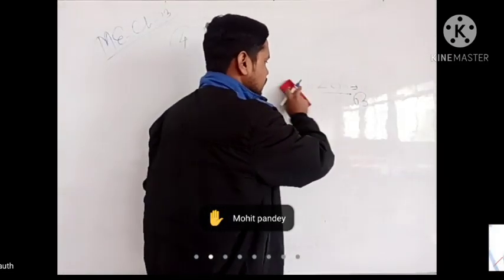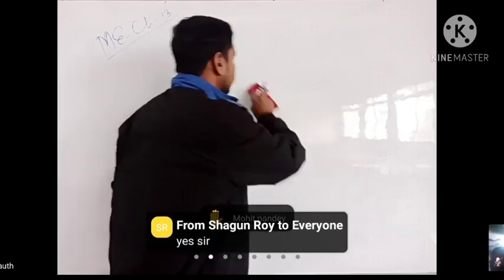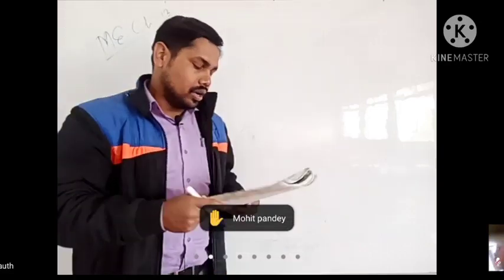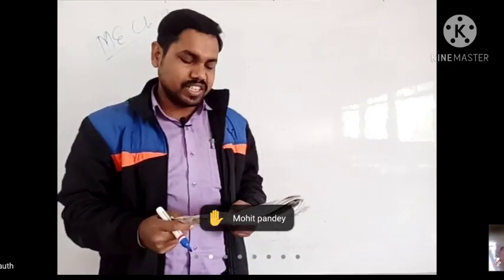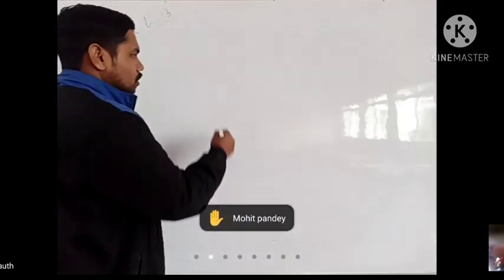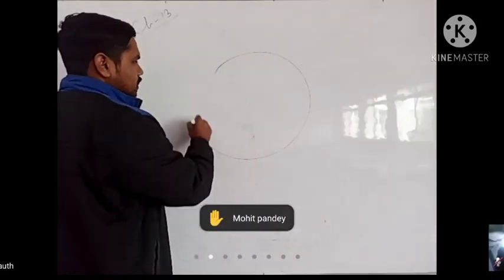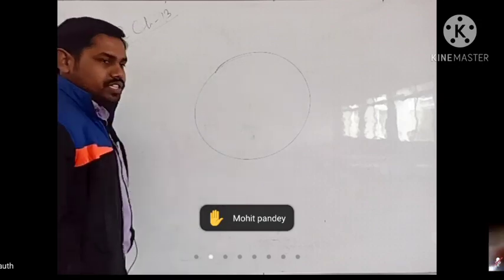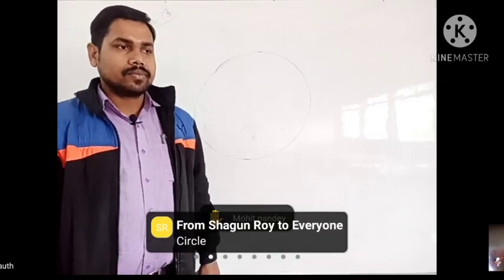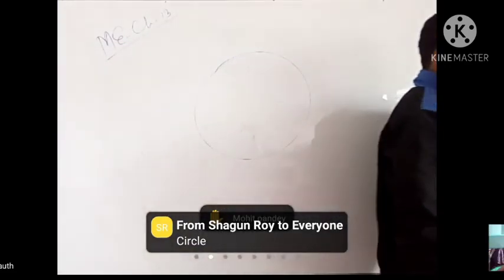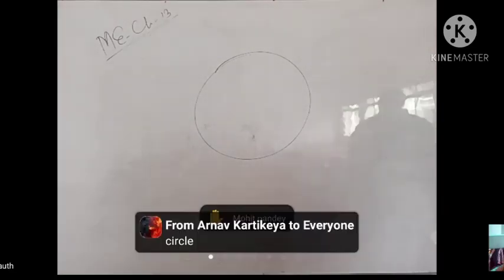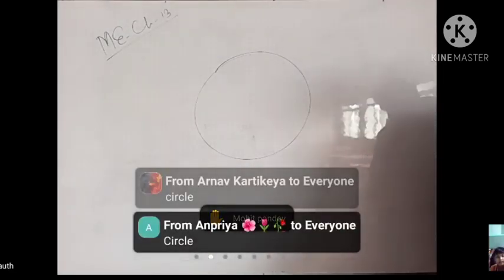Before moving to question 6, let us see if you all remember the topics we have learned. So first question is asking the shape of a chapati — which geometrical shape is this? Kaunsa shape hai yeh? Exactly, circle. So circle is absolutely correct answer. Shape of chapati is circle, toh iska answer ho jaayega circle.